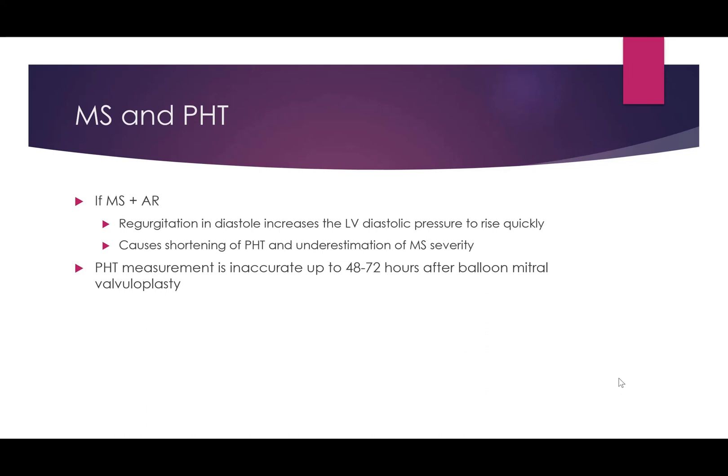When mitral stenosis coexists with aortic regurgitation, the LV fills both across the stenotic mitral valve and via regurgitant flow across the aortic valve, causing LV diastolic pressure to rise quickly. This shortens the pressure halftime, resulting in underestimation of mitral stenosis severity. So if AR is present with MS, the PHT will be shortened and mitral stenosis severity will be underestimated.